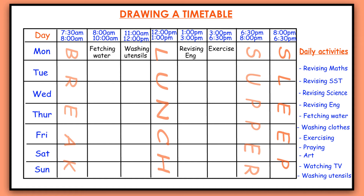Now Tuesday. Tuesday I'll still have breakfast at the same time. After breakfast, on Tuesday I'll go for washing clothes. Then after that I need to be revising mathematics. After mathematics I go for lunch. After lunch I can go and fetch water. Then I have some time for watching television. Then supper and finally sleeping. Tuesday is done.